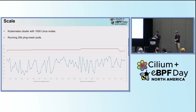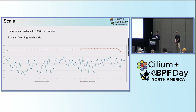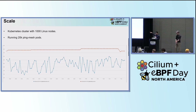Finally, touching on scale — users want continuous observability but don't want it consuming memory or CPU cycles from their actual workloads. We tested a thousand-node Linux cluster running 20,000 ping-mesh pods, where each pod makes new TCP connections every 500 milliseconds to one of the other random pods. Over a 10-hour period, the red line shows memory requested from the OS and the blue line shows heap memory usage. Even with 20,000 pods, memory usage is flat — not increasing at an unbounded rate. This is a sustainable way of running Retina agents with a bounded amount of memory.